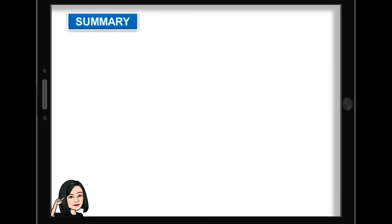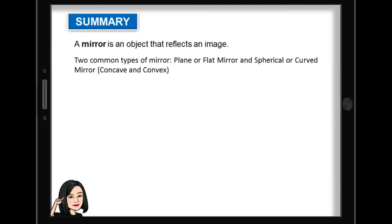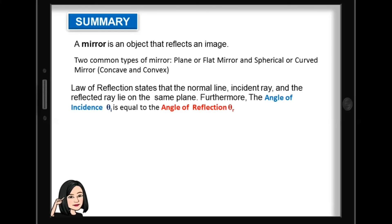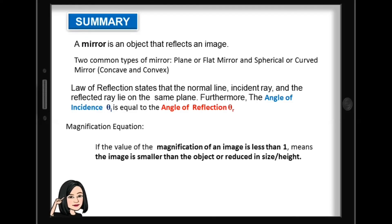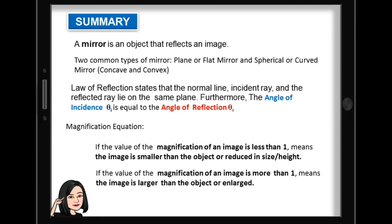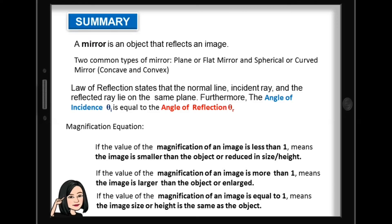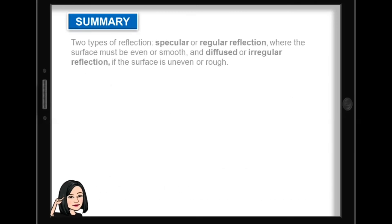To summarize what you have learned: a mirror is an object that reflects an image. There are two common types of mirror — plane mirror (flat mirror) and spherical or curved mirror, with concave and convex as two examples. According to the law of reflection, the normal line, incident ray, and reflected ray lie on the same plane, and the angle of incidence is equal to the angle of reflection. For the magnification equation: if magnification is less than one, the image is smaller; if more than one, it is enlarged; if equal to one, the image size is the same as the object. There are two types of reflection — specular or regular reflection (smooth surface) and diffuse or irregular reflection (rough surface).